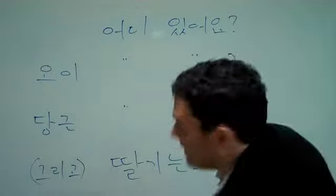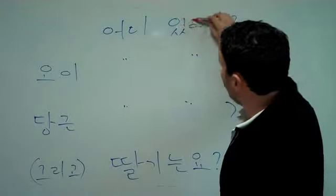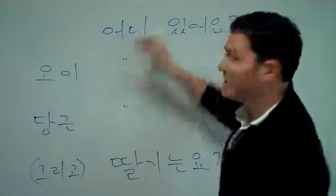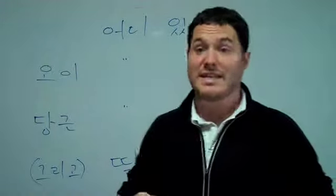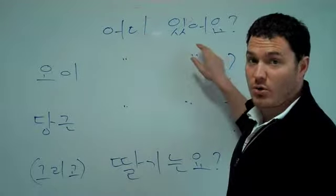A little bit about the pronunciation of this. Here we have an E, the E vowel, and here we have the E sound as well. This is going to combine into one E sound. So, 어디 있어요? 어디 있어요?